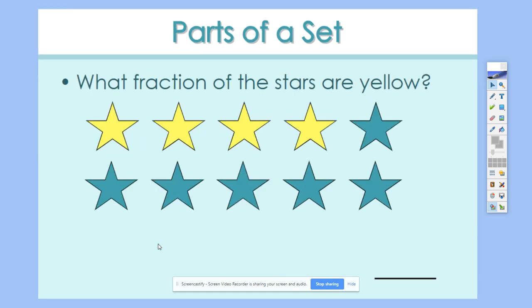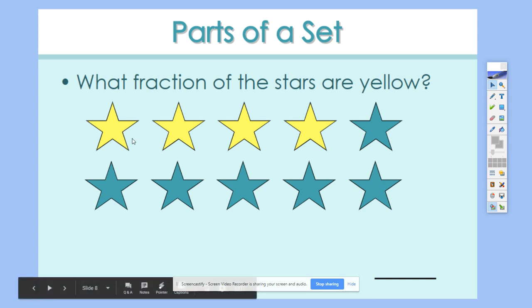You guys try this one. So what fraction of the stars are yellow? And I'll pause, and you could pause also while you figure this out. All right. If you said four of them are yellow, so four out of how many? There are 10 total stars. So you should have wrote four over 10. So four-tenths of the stars are yellow.